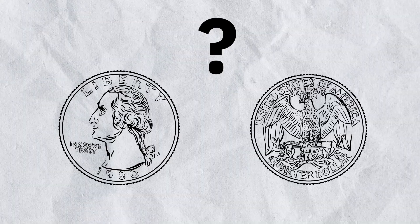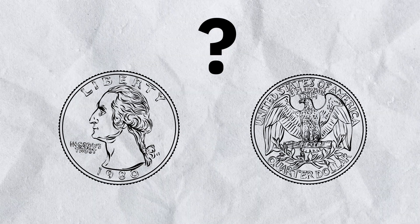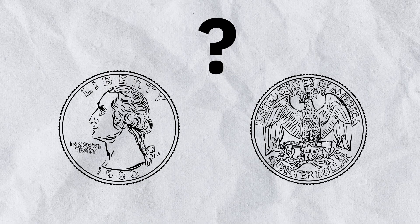Suppose you go to a magic shop and you buy a biased coin. It's designed to land on the same side 75% of the time. The problem is you can't remember whether it lands on heads 75% of the time or tails 75% of the time. You flip the coin once and it lands on heads. The fact that it lands on heads is evidence that it's a heads-biased coin.